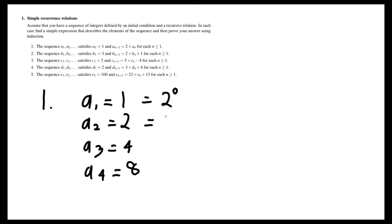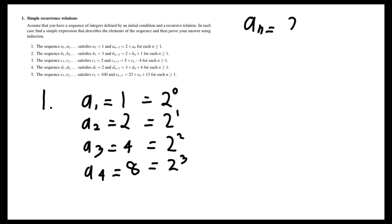So you have 2 to the 0, 2 to the 1, 2 squared, 2 cubed, and so on. So we can hypothesize that in general, aₙ is equal to 2 to the n minus 1.